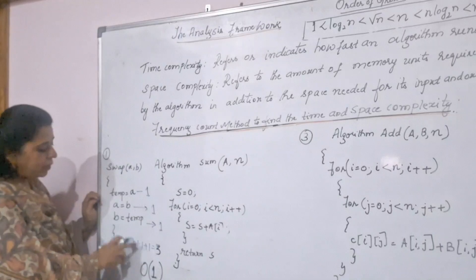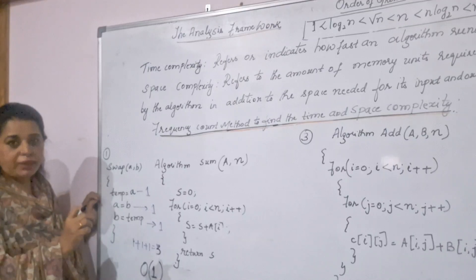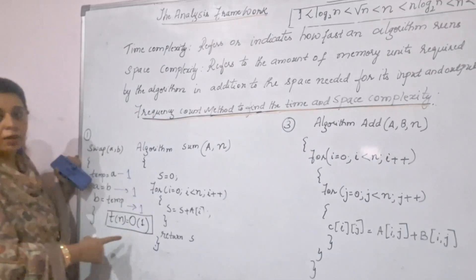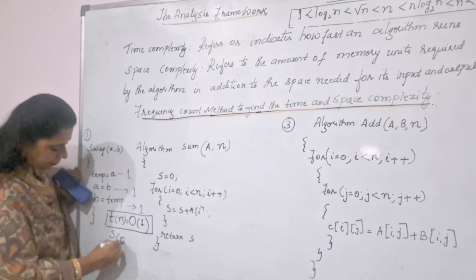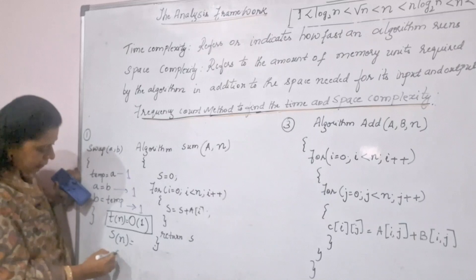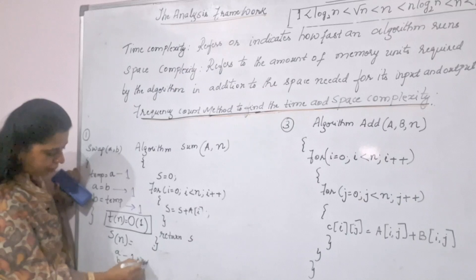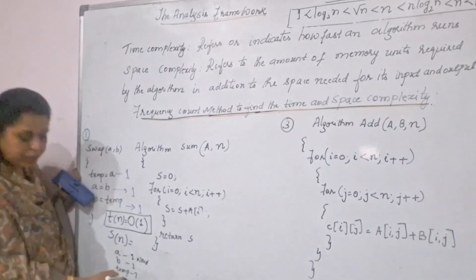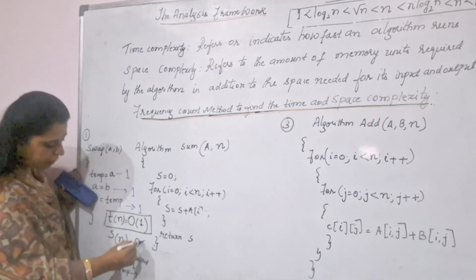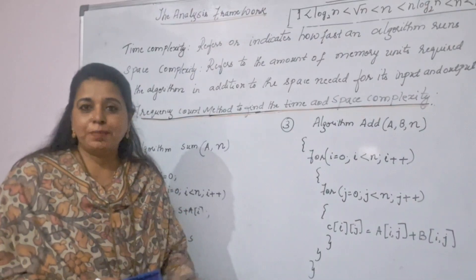To calculate the space complexity for this same algorithm, you check which variables are used. All normal variables are assumed to take one word in memory. The variables used here are a, b, and temp — these are simple variables taking one word each: one plus one plus one equals three. Any such constant number reduces to order of one, so the space complexity of this algorithm is also order of one.